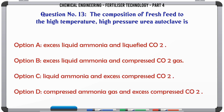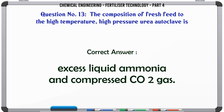The composition of fresh feed to the high-temperature high-pressure urea autoclave is: a. excess liquid ammonia and liquefied CO2, b. excess liquid ammonia and compressed CO2 gas, c. liquid ammonia and excess compressed CO2, d. compressed ammonia gas and excess compressed CO2. The correct answer is: excess liquid ammonia and compressed CO2 gas.